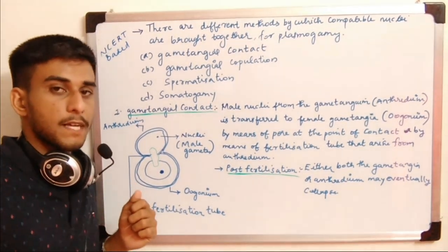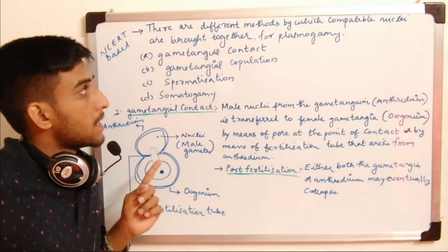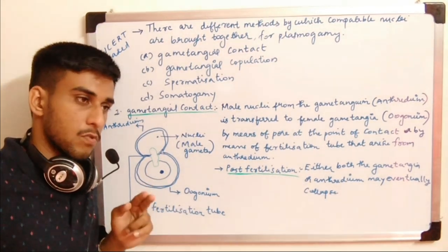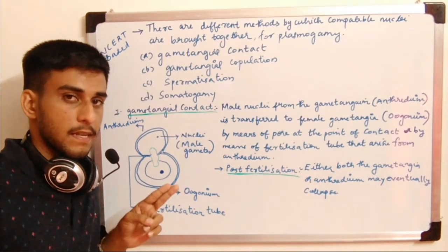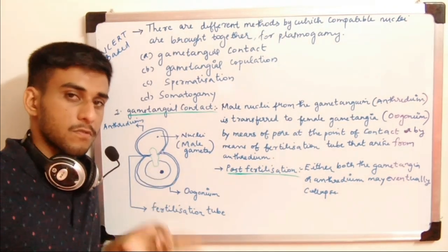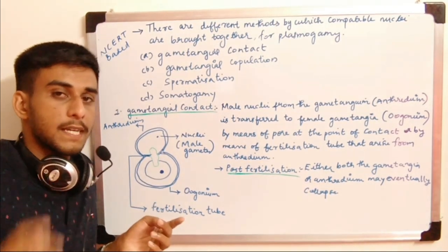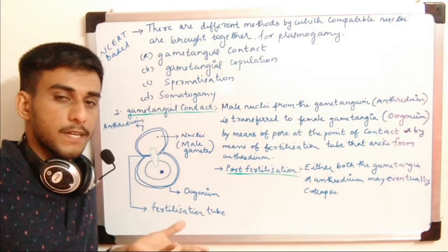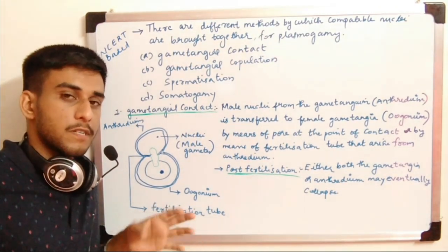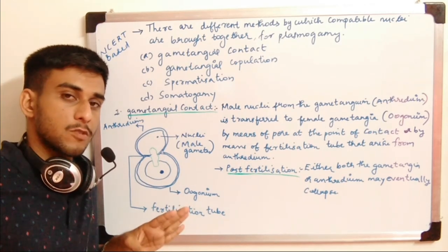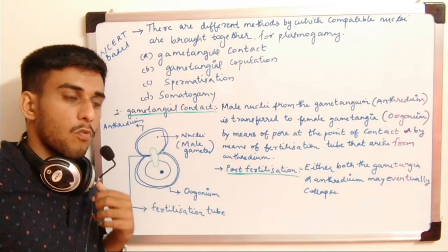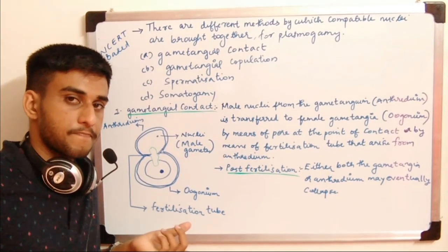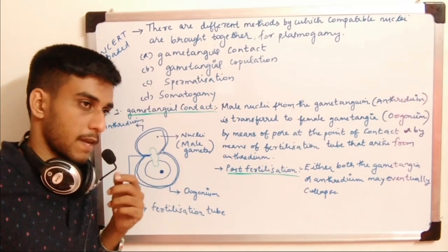There are different methods by which nuclei meet: first is gametangial contact, second is gametangial copulation, third is spermatization, and fourth is somatogamy. We will first discuss gametangial contact.